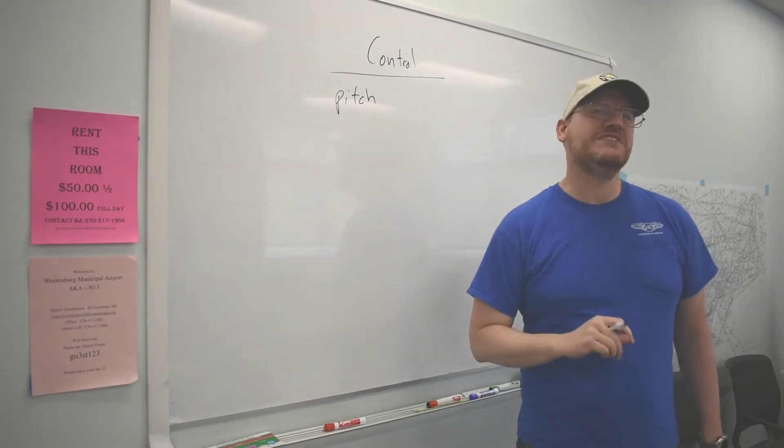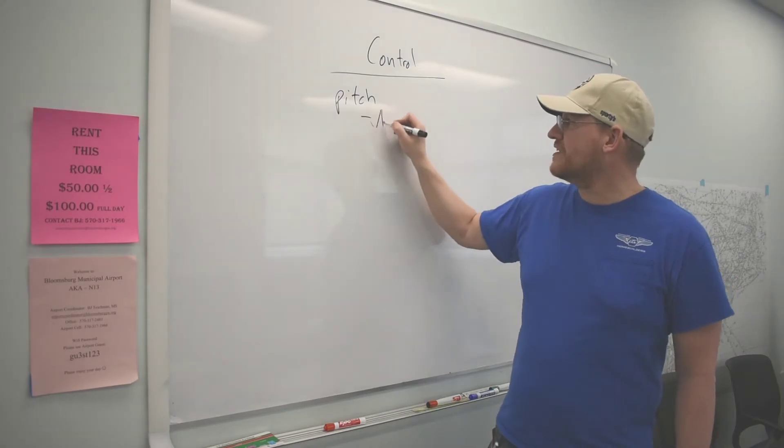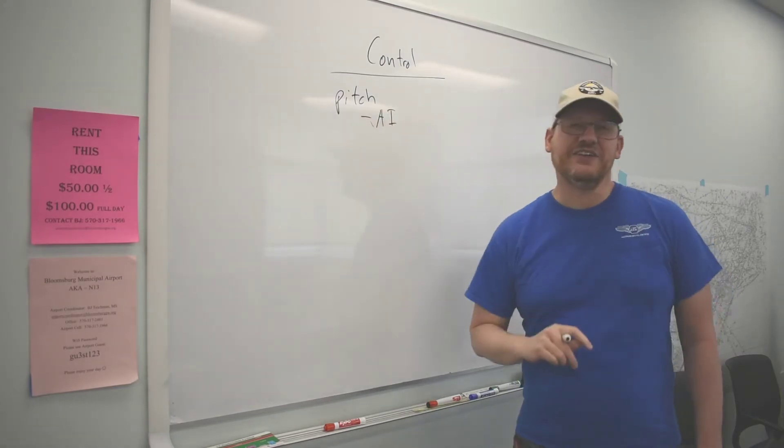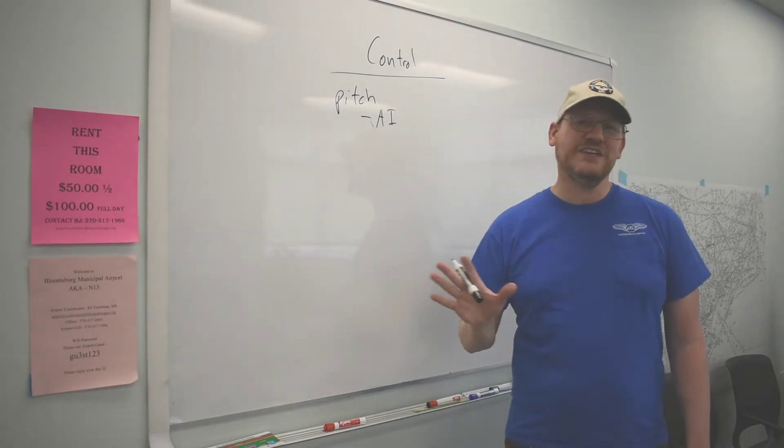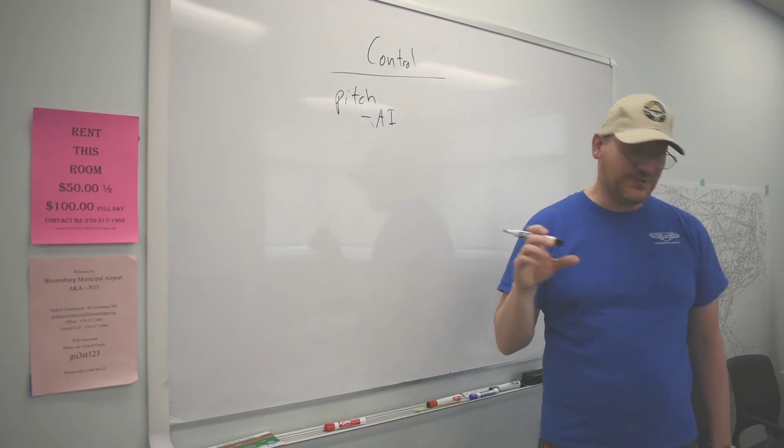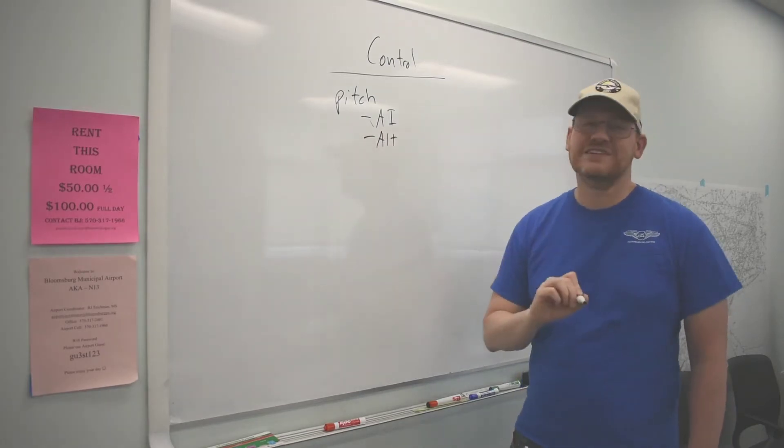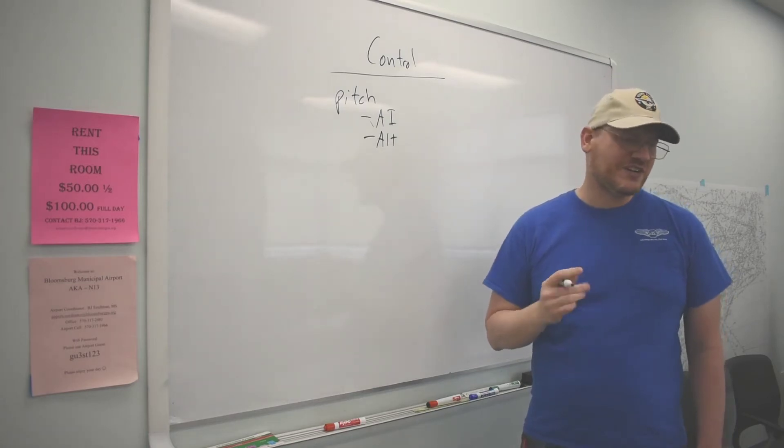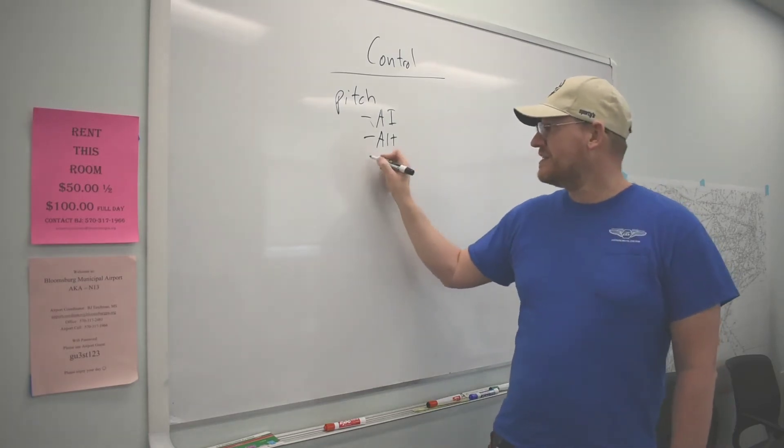What instruments give us pitch information? Well, our AI, our attitude indicator. This is going to be your favorite instrument because you'll notice that almost anything you do, the AI will help tell you if you're doing it right. Altimeter. If your pitch is wrong, you're going to climb or descend if that's not what you desired.